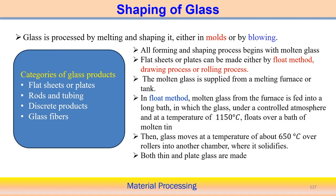All forming and shaping processes usually start with the molten glass. For flat sheet or plate, it can be made either from the float method, drawing process, or rolling process — these are different kinds of forming operations we can apply in the processing of glass. The rolling process is one of the most important and economical processes associated with glass processing.